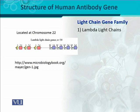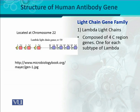Let's start with the light chain gene. As we know, immunoglobulins are composed of two light chains and one heavy chain. One of the light chains is the lambda chain. The gene location of the lambda chain in the human genome is on chromosome number 22, and it is composed of four C region genes — C stands for constant region. Lambda contains four different types: lambda 1, lambda 2, lambda 3, and lambda 4.